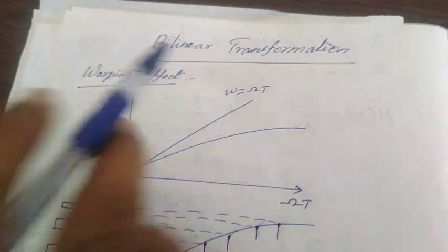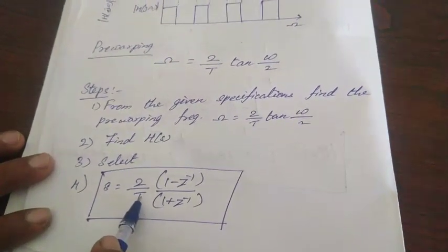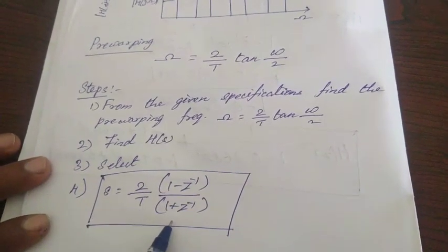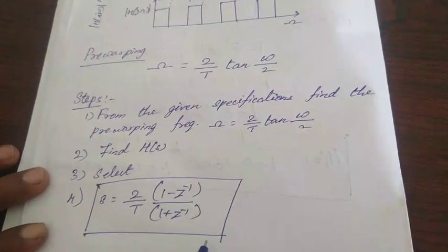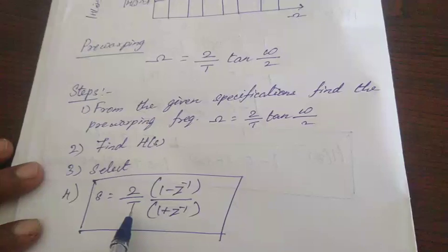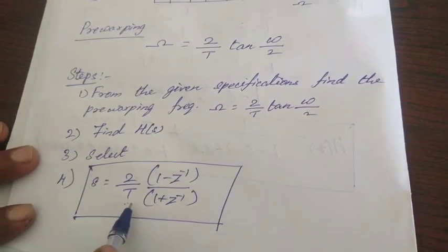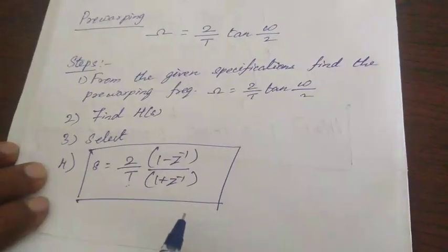In the bilinear transformation, we are replacing s values by 2 by T into 1 minus z inverse divided by 1 plus z inverse. This equation is termed as bilinear transformation where T is the sampling period. Suppose T is not specified in the problem, we can assume T is equal to 1 second in the bilinear transformation.